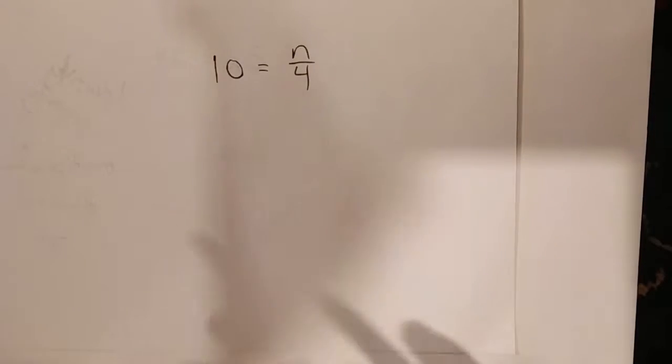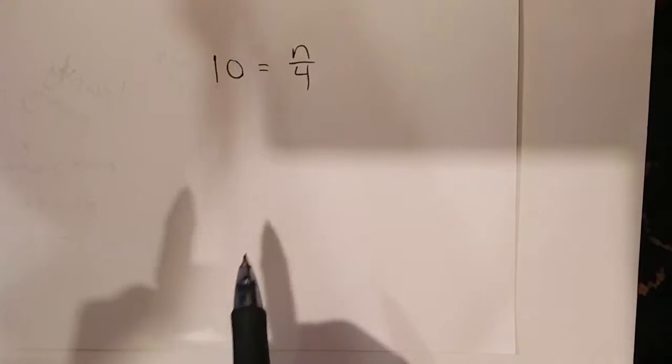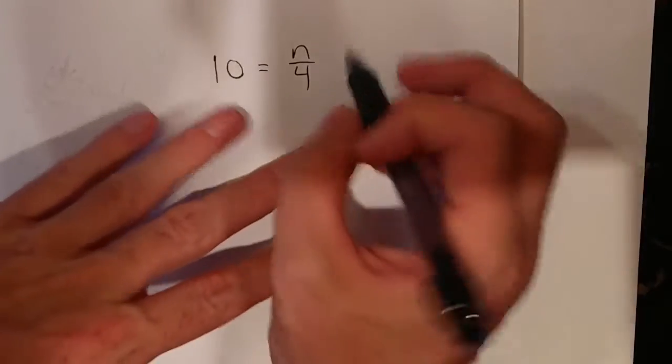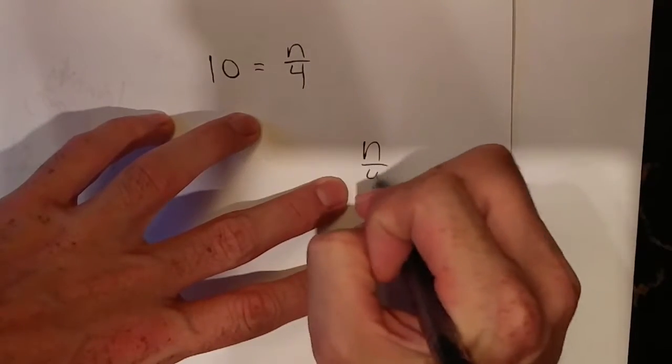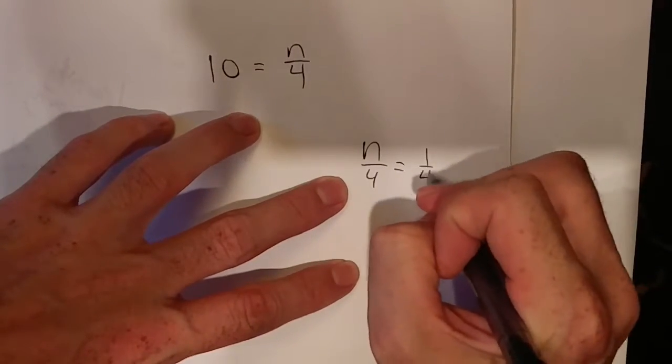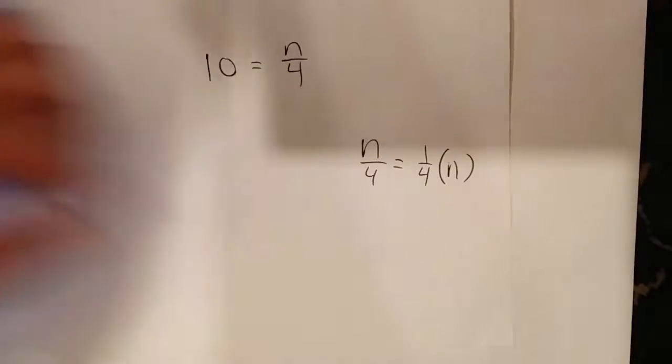But I can write this in a different way, can't I? I know that n over 4 is the same as a fourth of n, right, or a quarter of n.